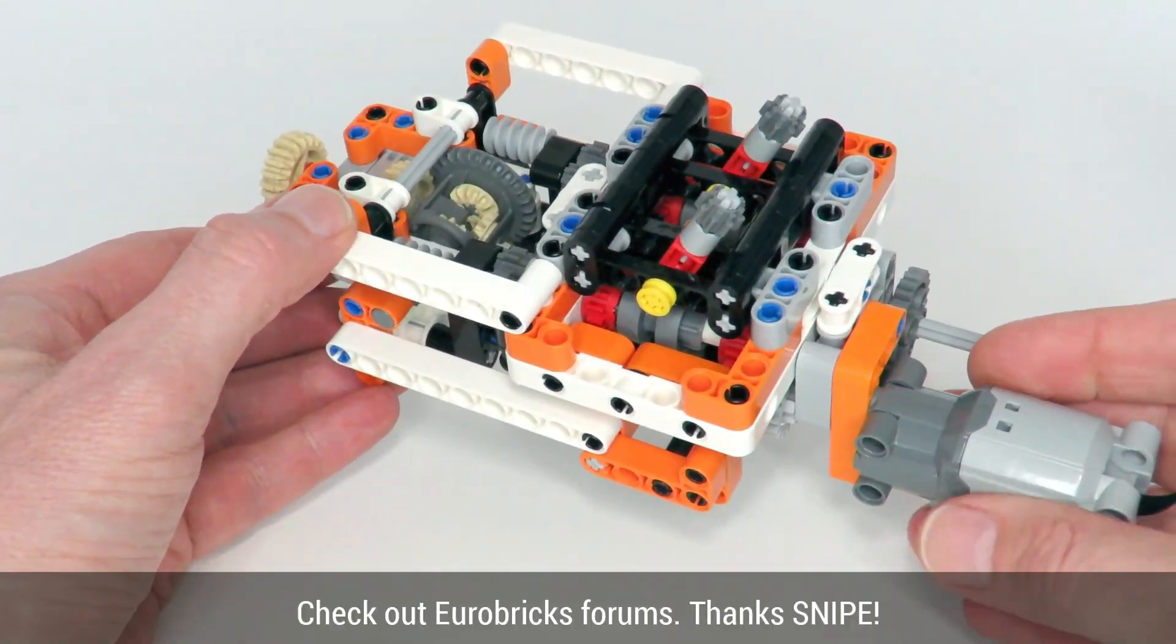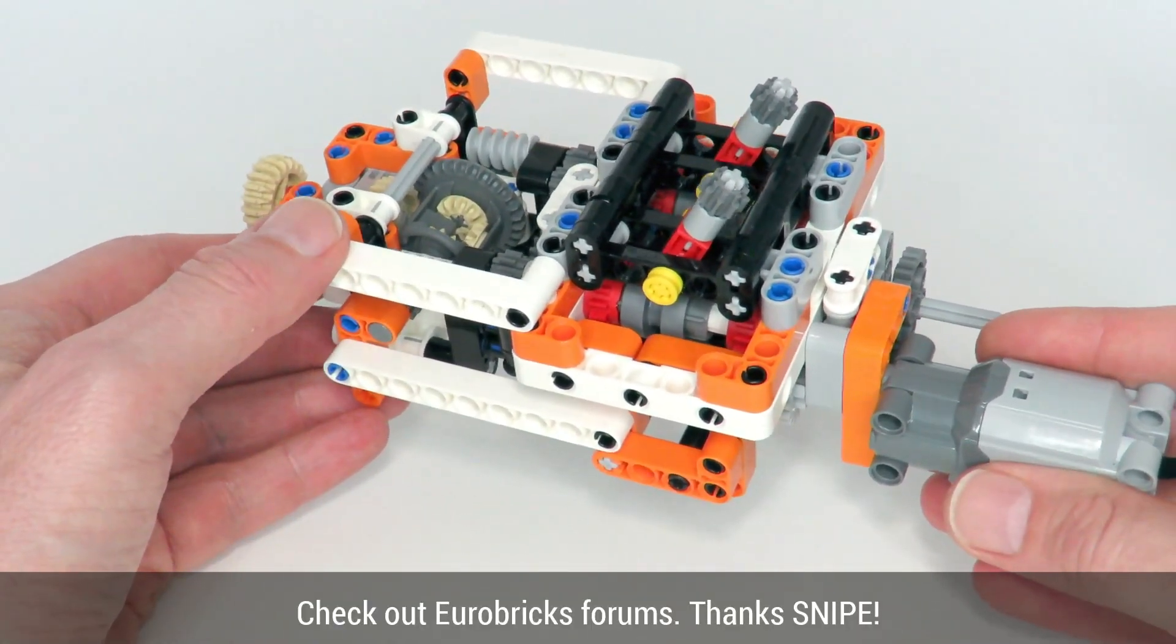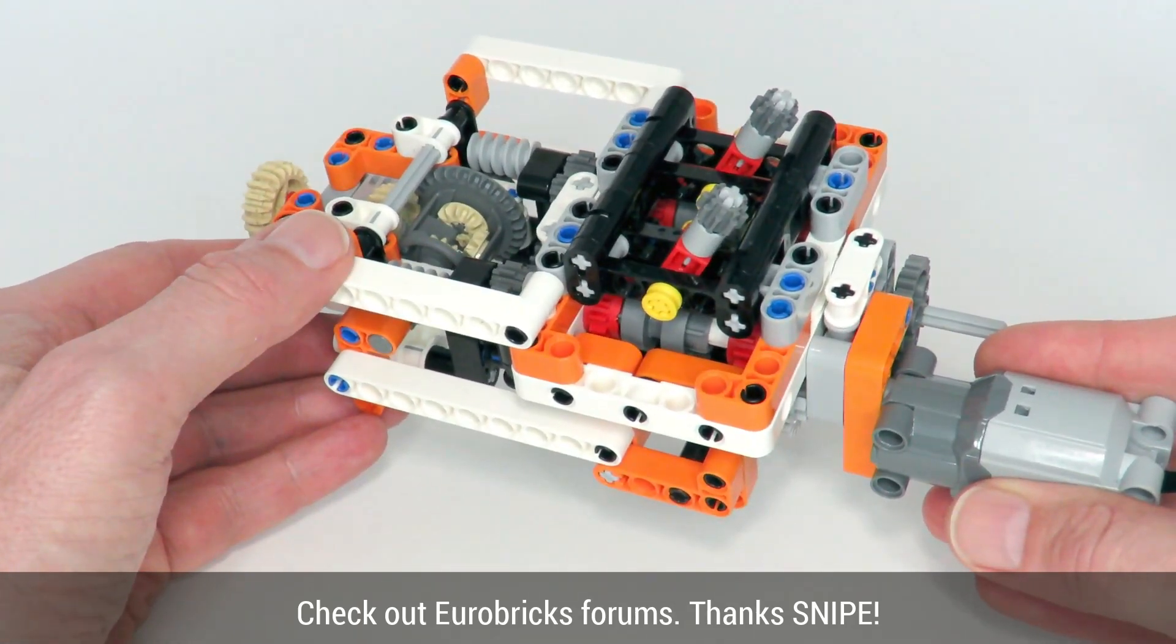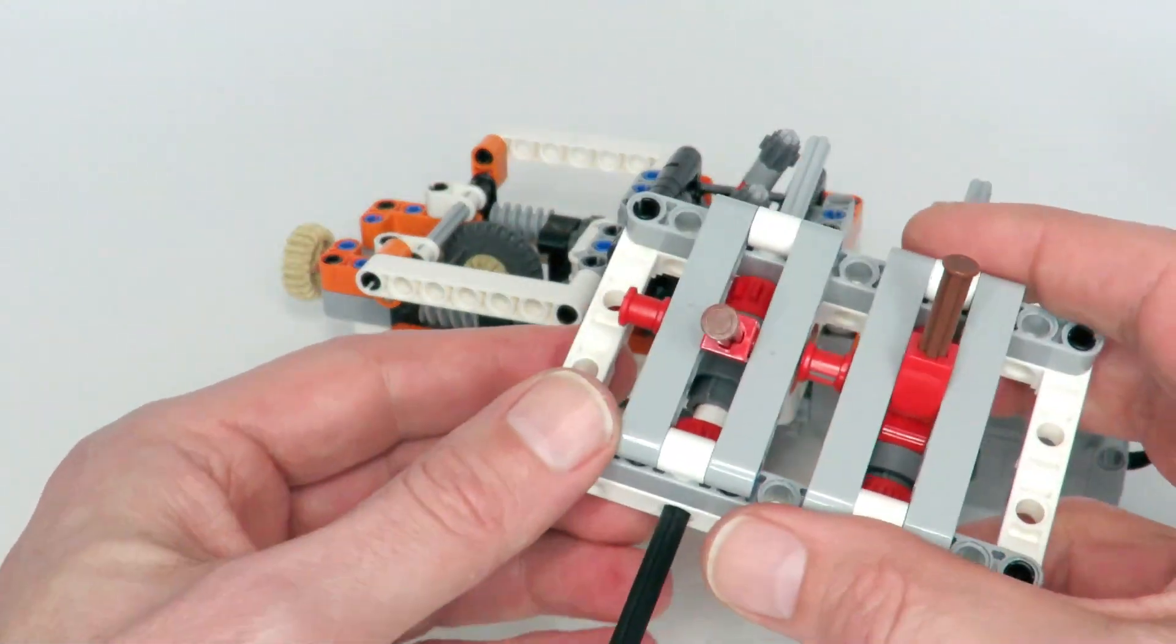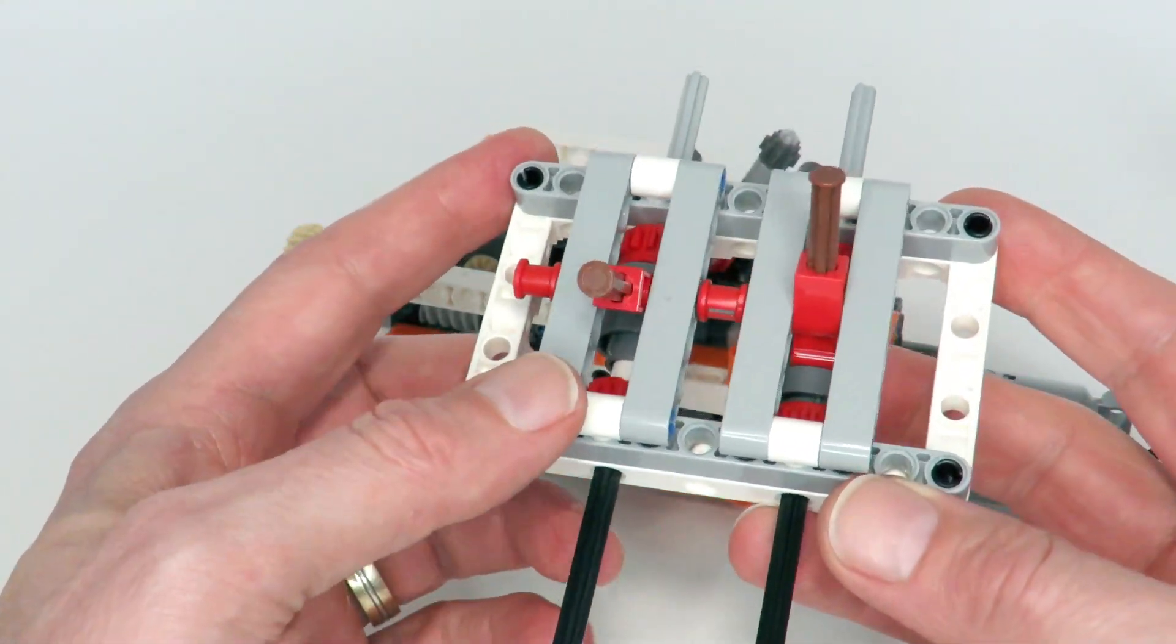Now the idea for this gearbox came about from someone on the Eurobricks forum called Snipe, and he asked my help with a particular gearbox design that he had. The idea for that design was that if you normally create a four-speed gearbox, you'd have two levers.